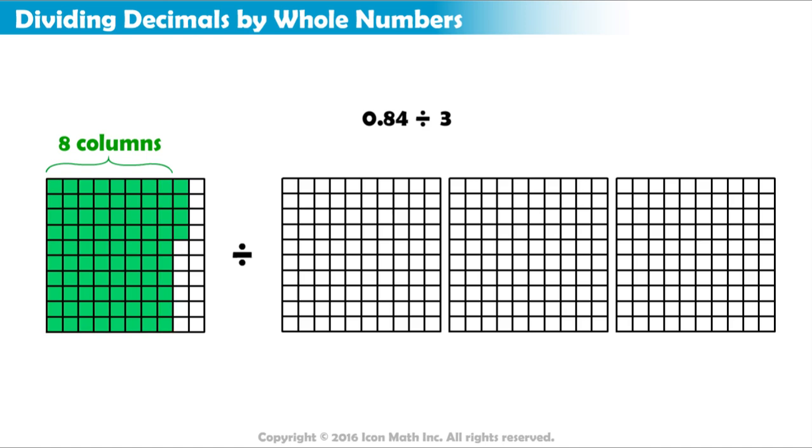Let's give each of the 3 groups 1 column. Now we have 5 columns remaining. We can give each group 1 more column, so 2 columns remain.